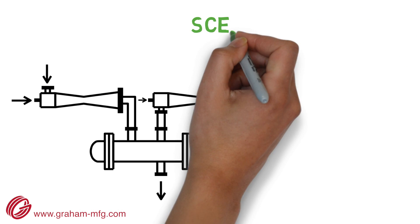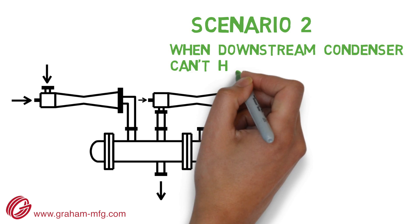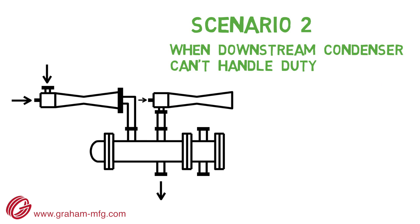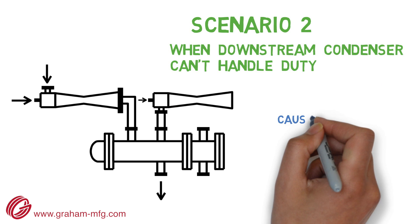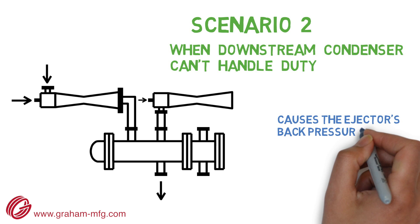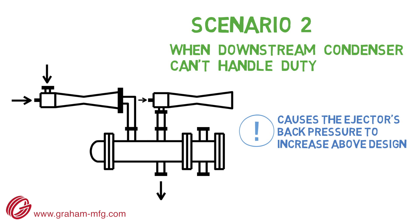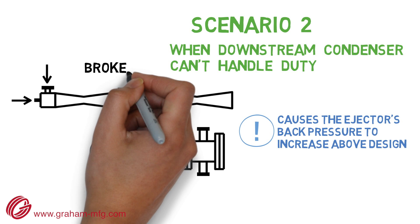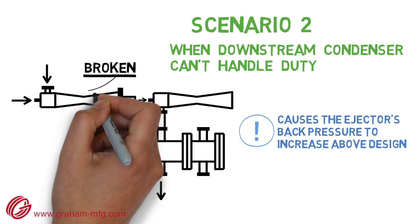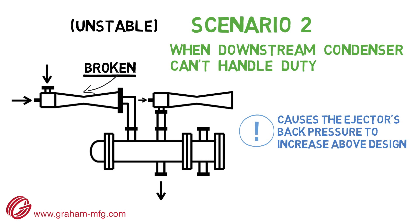The second scenario is when the downstream condenser cannot handle the extra duty. This then causes the ejector's back pressure to increase above design. In this case, the first-stage ejector breaks down and suction pressure is significantly increased.